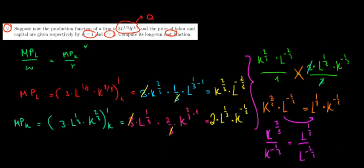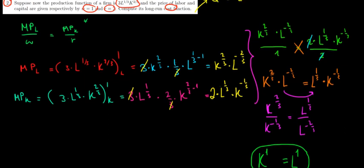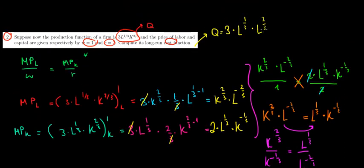With the relationship k = l, we substitute into our production function to find capital and labor in terms of quantity, since the cost function must be a function of quantity supplied. The production function becomes 3 times l^(1/3) times l^(2/3), which is 3 times l^1, so Q equals 3 times labor. Therefore, labor equals Q/3, and since k = l, capital also equals Q/3.